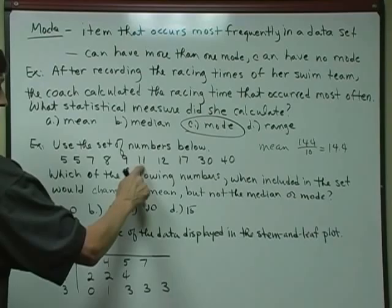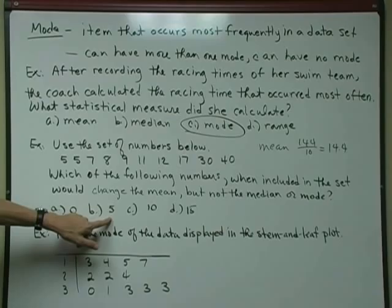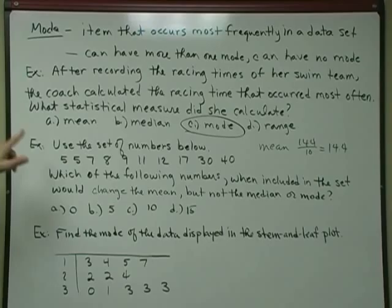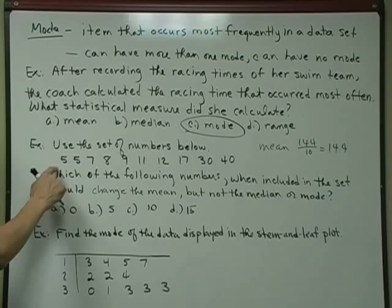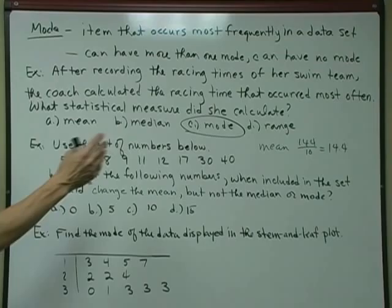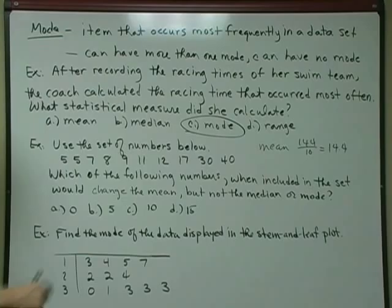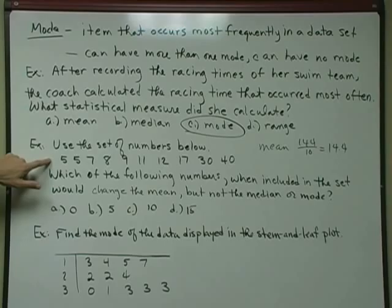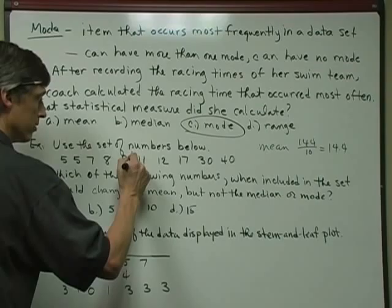So what we want to do is we want to see, do any of these ones change the mean, but not the median or the mode? Now, first off, the mode is 5, because it's the one that occurs twice. No other number occurs more than one time. The median, since there is an even number of data, you take the 2 in the middle, 9 and 11, and you average them, and that's a 10. See, if I bring a 5 in, a 5 as an extra set, that's not going to change the mode. That's going to keep the mode the same, but what's going to happen is I'm going to change how many bits of data I have, and that's going to make me have 11 pieces of data, and then the middle number is going to be the 9, and that's going to change the median.